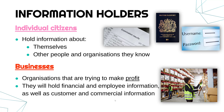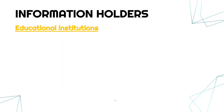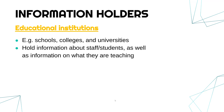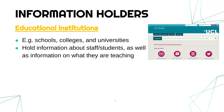A third holder of information are educational institutions — things like schools, colleges and universities. They aim to teach people content at any age, and so they often hold information about staff and students as well as what they're teaching. Often there'll be an online website — this is one from UCL, a university — where it holds all of their course information. That's fairly important because it's really the main service they provide, and so it has to be held, organised, and easily accessible to students.